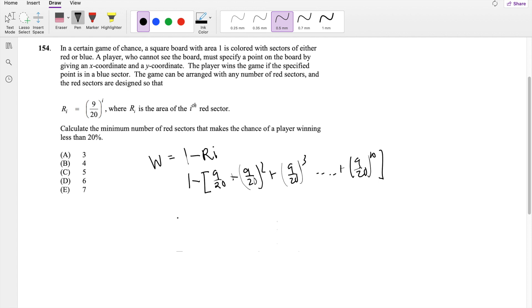This is exactly a geometric sum series, summing from I equals 1 to infinity of 9 over 20 to the I.